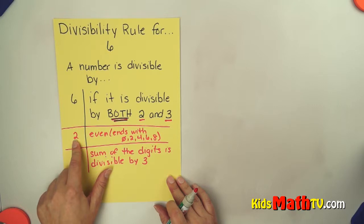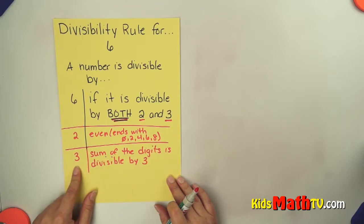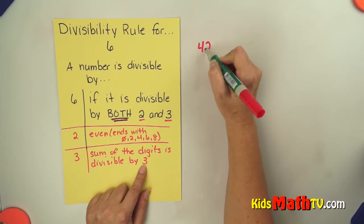The rule for 2 is a number is divisible by 2 if it is even, if it ends with 0, 2, 4, 6, or 8. And the rule for 3, a number is divisible by 3 if the sum of the digits is divisible by 3.